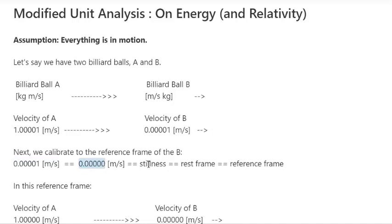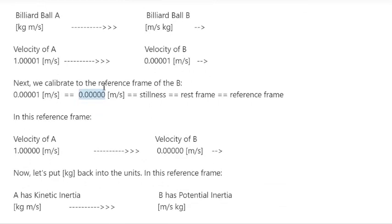We call that stillness, the rest frame, the reference frame. We subtract 0.00001 from B, which means we also subtract 0.00001 from A. So now in this new reference frame, A is moving at 1.000000 meters per second and B is moving at 0.000000 meters per second. That's basically relativity — when we're not moving close to the speed of light, this is how relativity works: fix a reference frame and measure the other object relative to it.